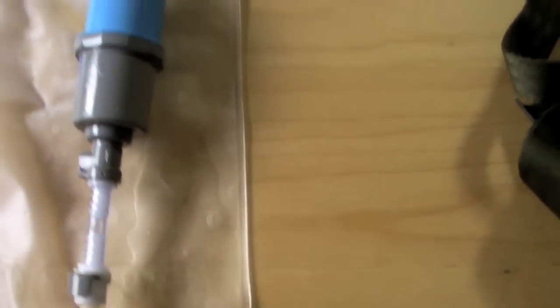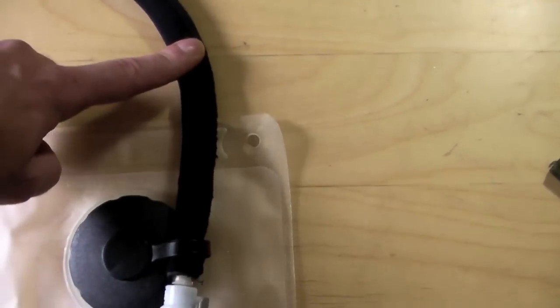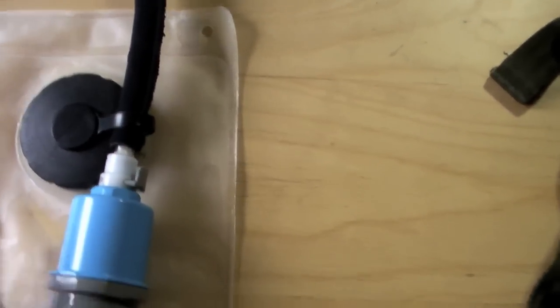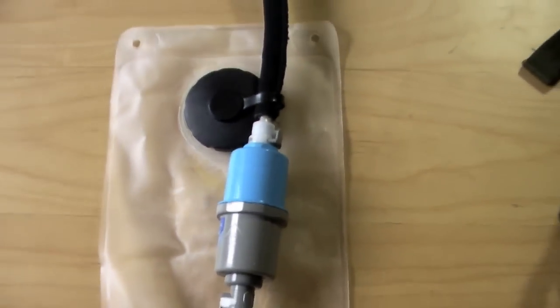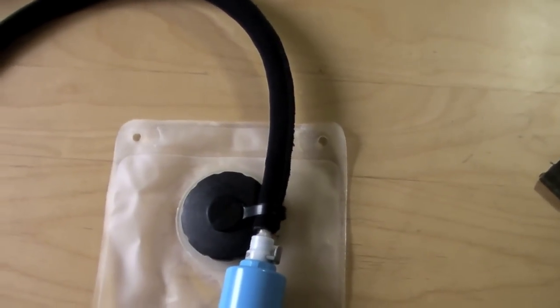That plugs into the bottom of the filter. One more adapter goes into the actual hose that came with the bladder bag. I pushed it into the end with a quick connector so that it sits inline with my bladder bag.